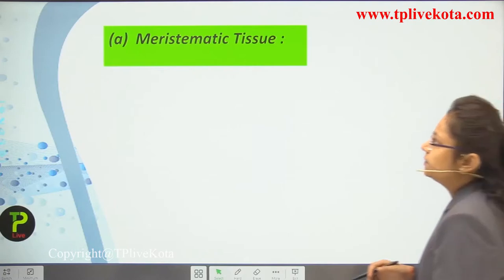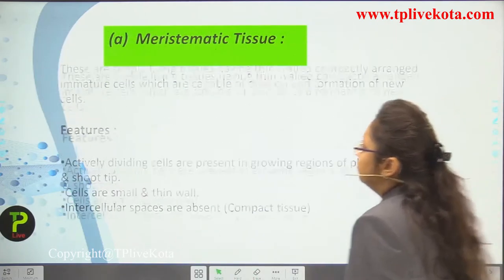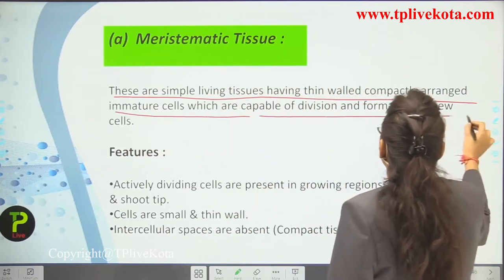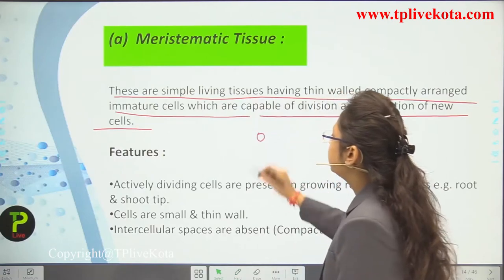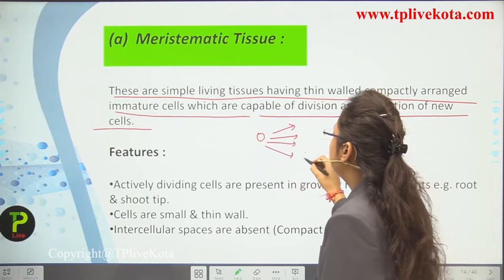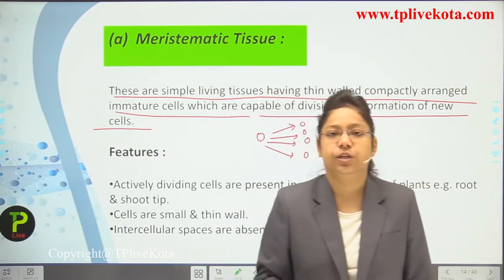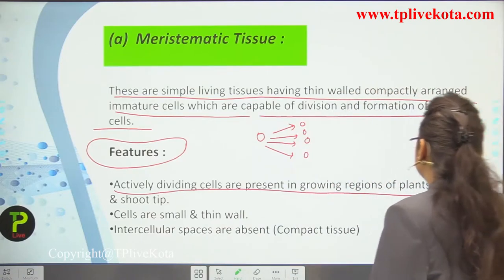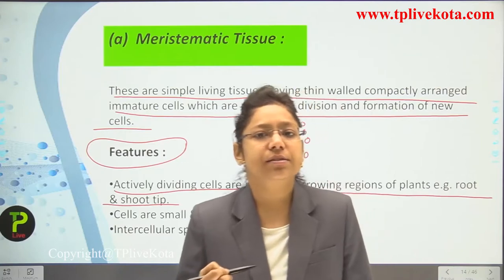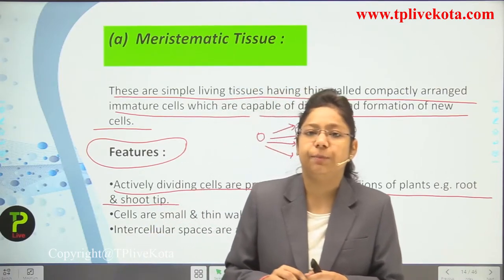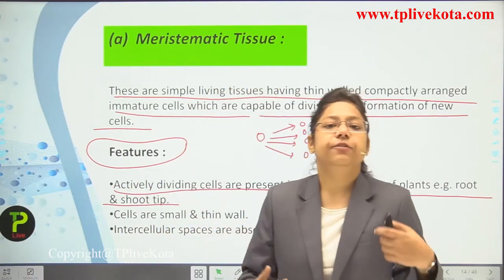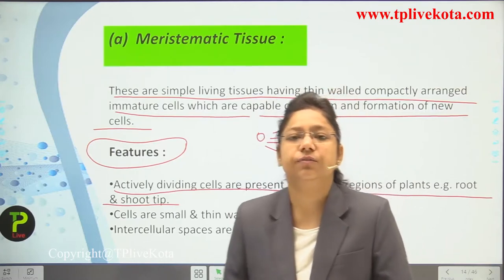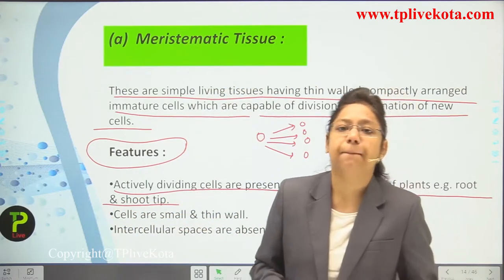Meristematic tissues are simple living tissues with thin-walled, compactly arranged immature cells capable of division and formation of new cells. They are actively dividing cells present in growing regions of the plant such as root and shoot tips. When we cut the root tip, after a few days a new root arises due to the apical meristem present there.